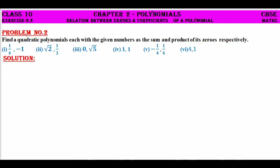Class 10 CBSE Maths Chapter 2 Polynomials, Exercise 2.2, Problem Number 2. Find a quadratic polynomial each with the given numbers as the sum and product of the zeros respectively.